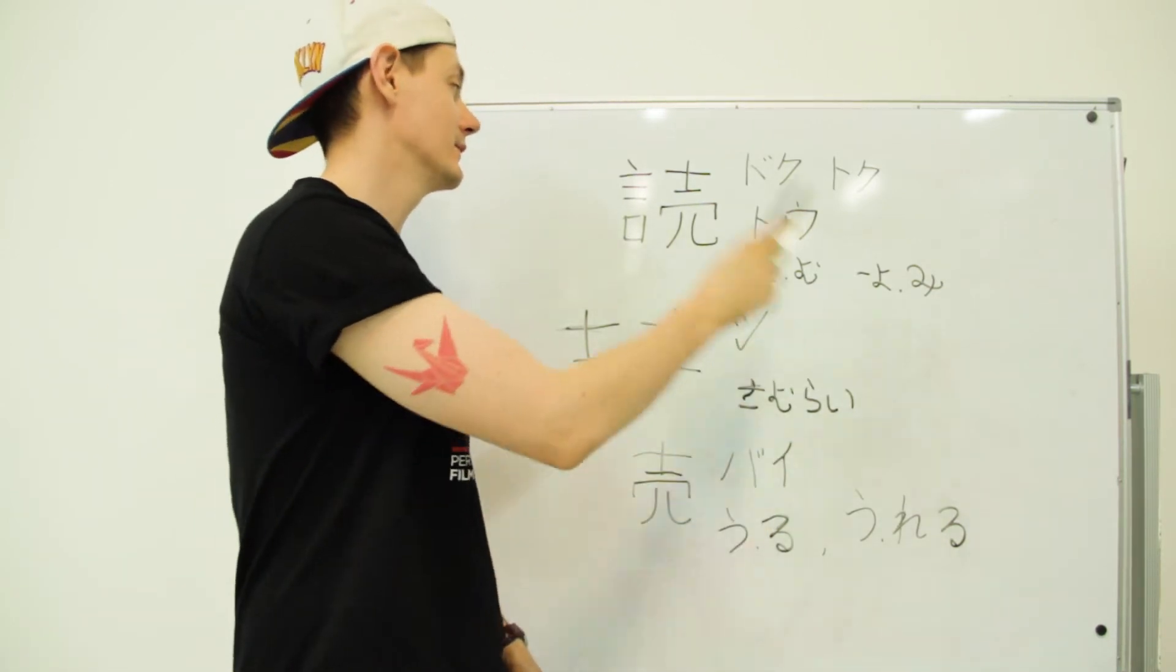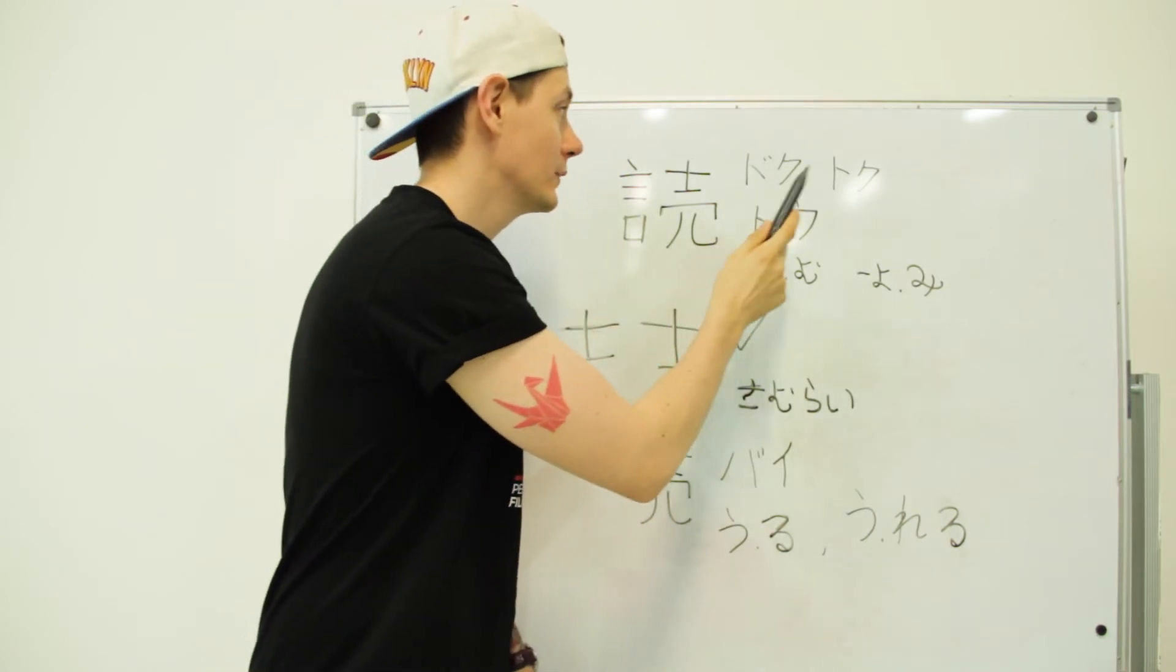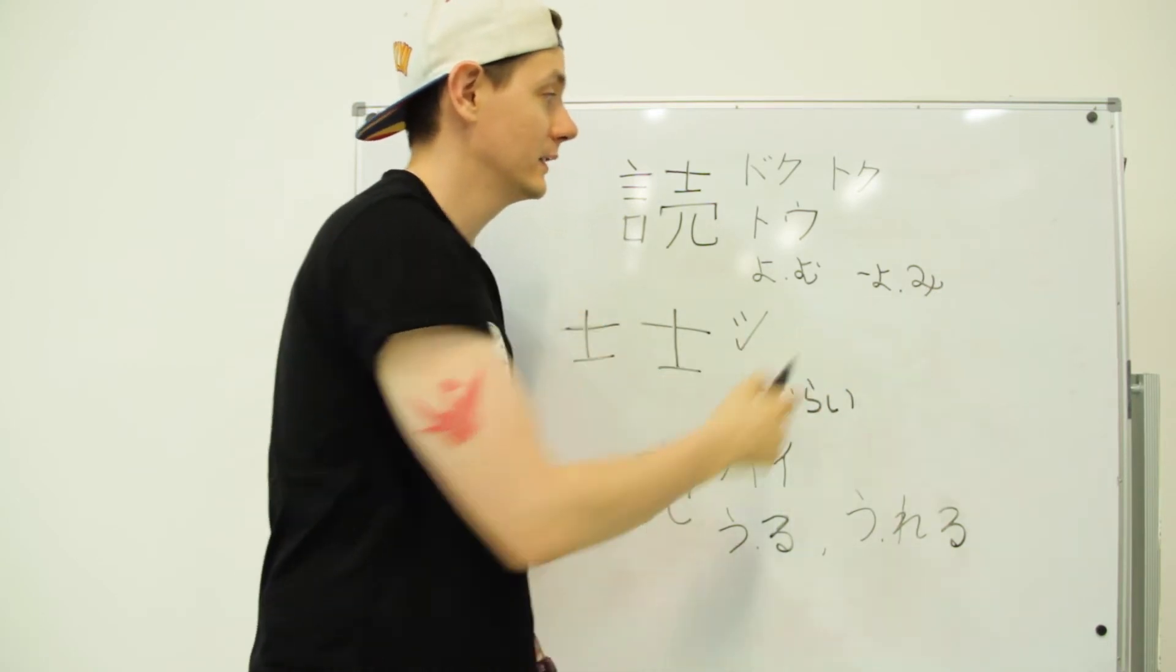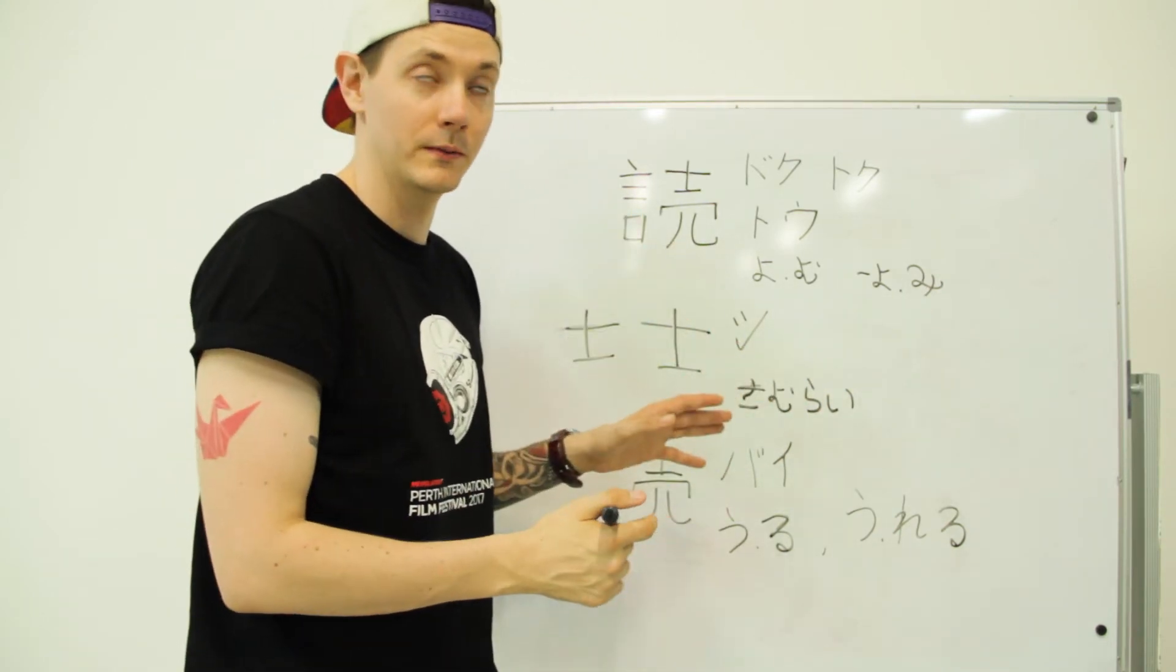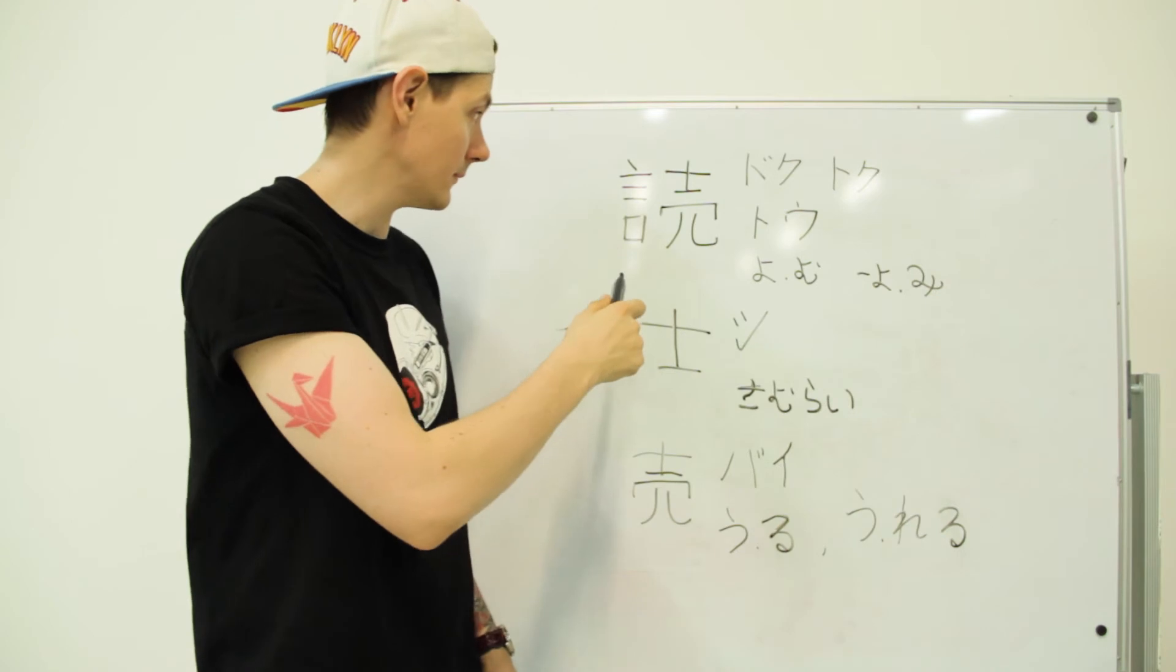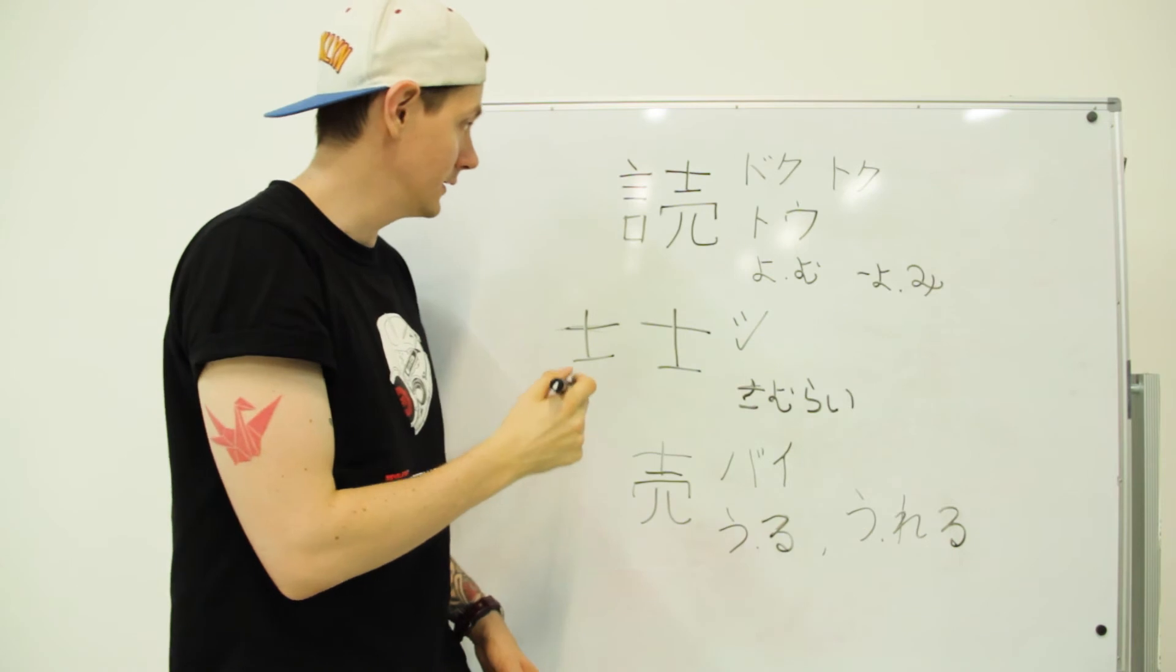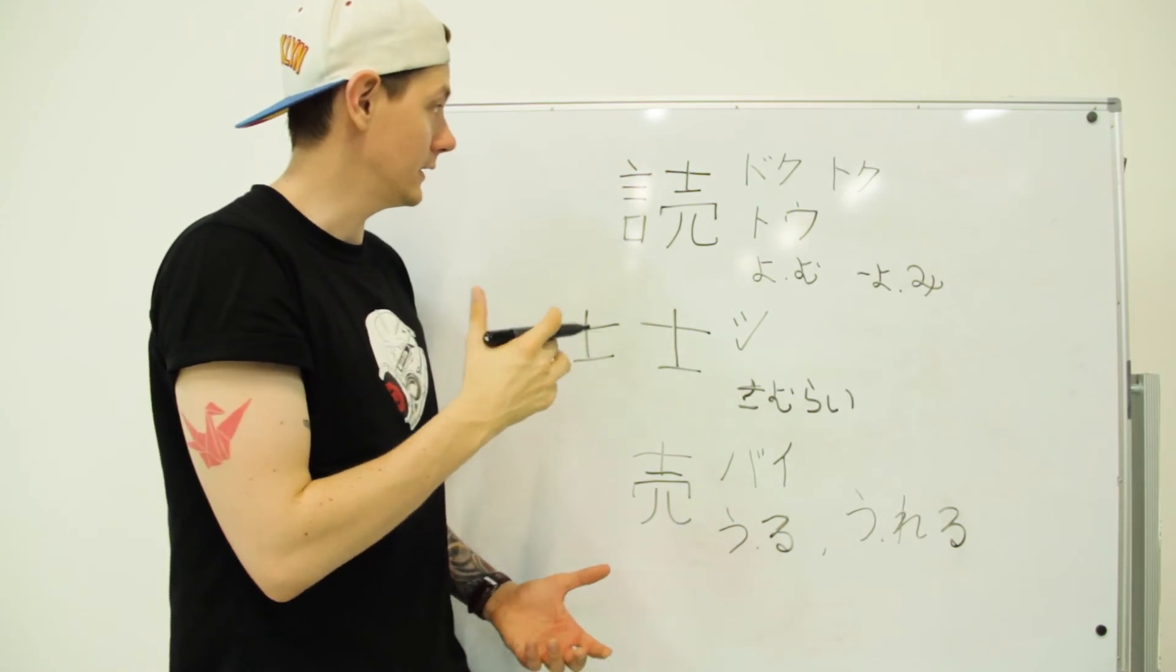Finally, we come back to the original Kanji for read, which is doku, toku, to as the onyomi reading, and yomu as the kunyomi reading, and yomi, the suffix, as the kunyomi reading. If we look at it, it's the kanji for sell, and it's the kanji for to say, and essentially,